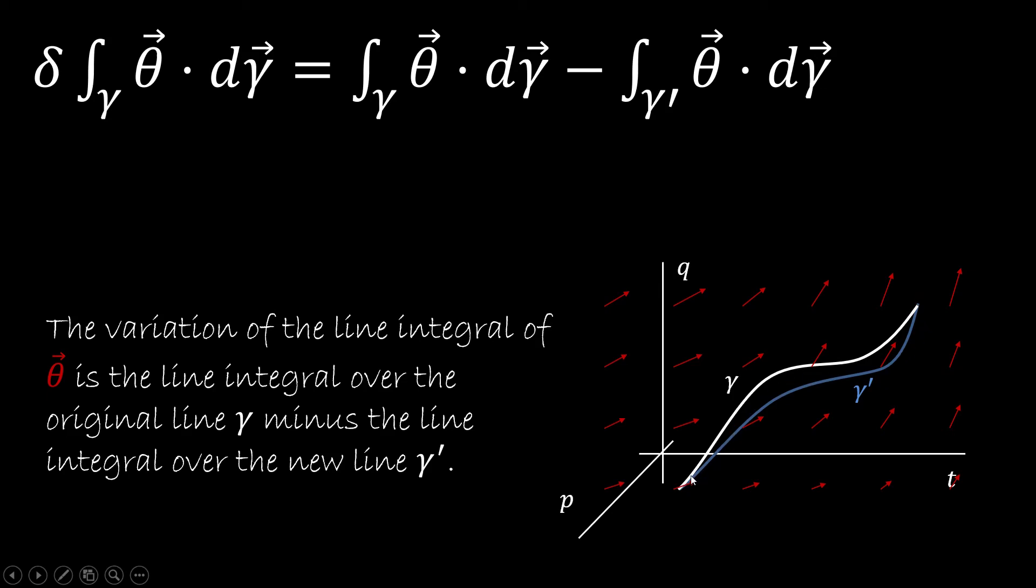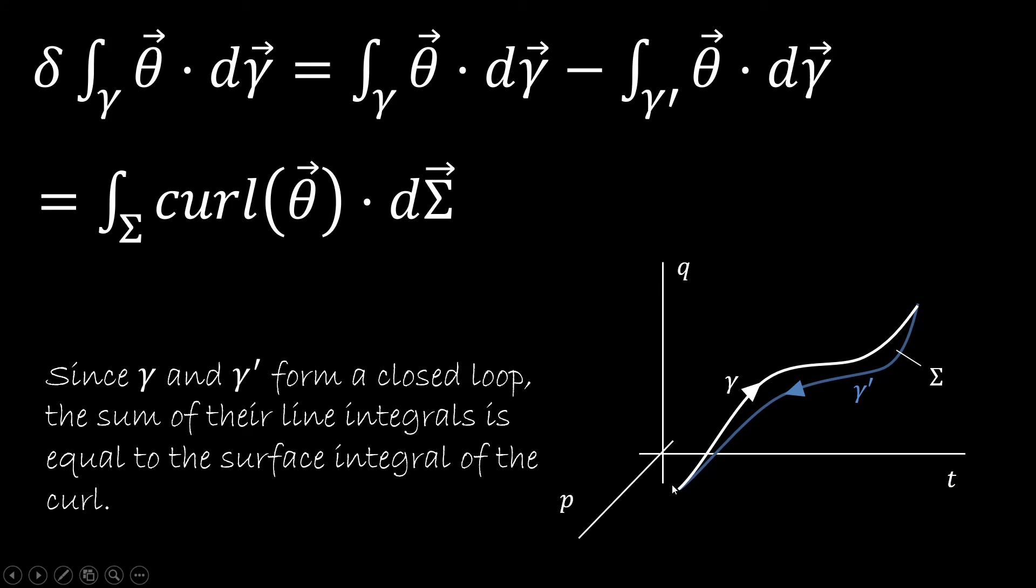But if we're making a line integral over a closed loop, we can use Stokes' theorem. So we are going to have that the variation is just going to be the integral of the curl of theta along sigma,